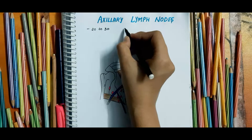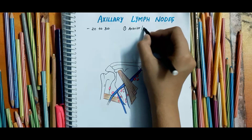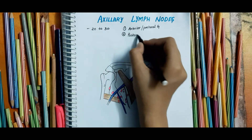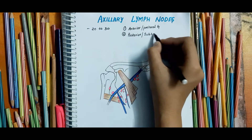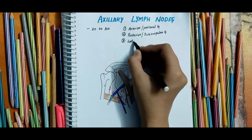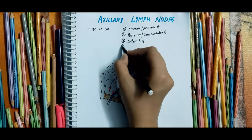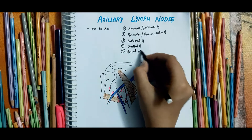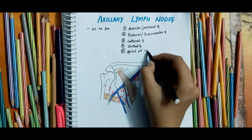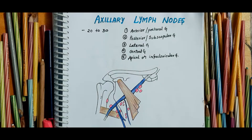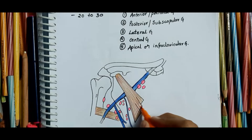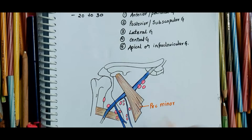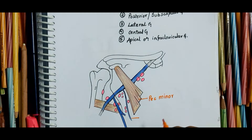They are divided into the following five groups: the first group is the anterior or pectoral group, the second group is the posterior or subscapular group, the third group is the lateral group, the fourth group is the central group, and the fifth group is the apical or infraclavicular group.